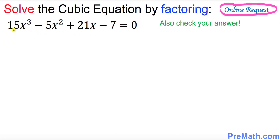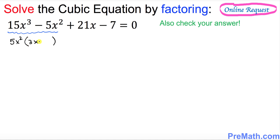The very first thing I want you to look at is the first pair over here. Look for the GCF between these two terms — you can see 5x squared is in common, so factor that out. Once you factor that out, we got in parentheses 3x minus 1.